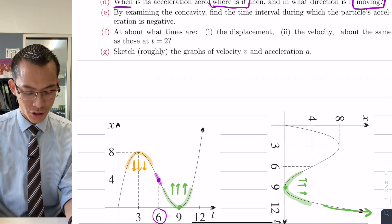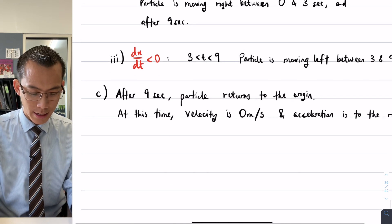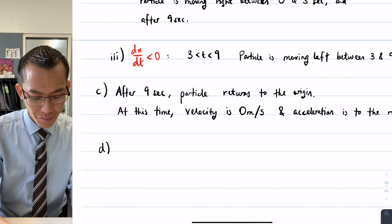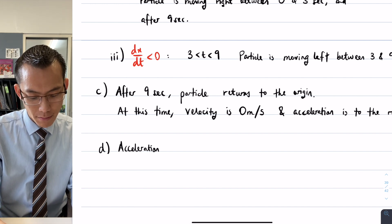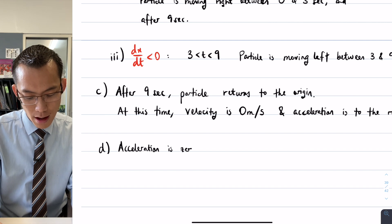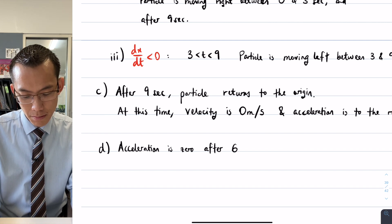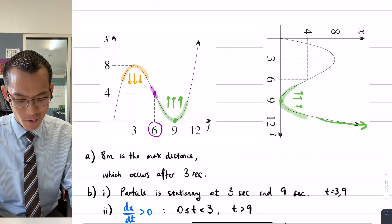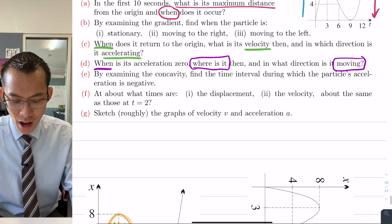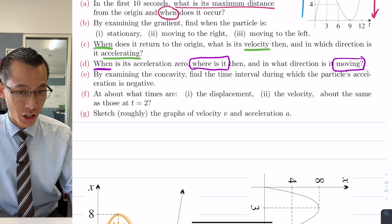So therefore I can say, first question, when is its acceleration zero? It's after six seconds, so let's write that down, acceleration is zero after six seconds, and then I have to go to the other parts of the question as well. So it then asks, where is it, in what direction is it moving.